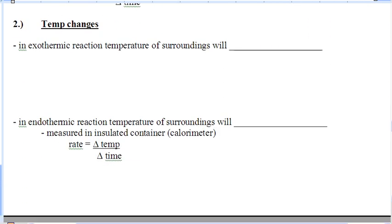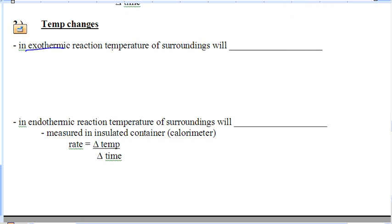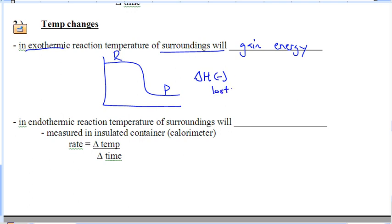The next one, temperature change. These are either exo or endothermic. Exothermic releases energy. The surroundings will get warmer or gain energy. The system itself will lose it. It starts off high, ends low. The reactants contain a lot of energy, contain a lot of heat, and the products are lower. This delta H value is negative. It loses energy.